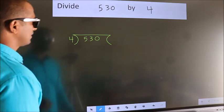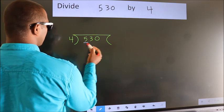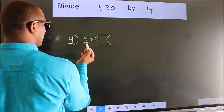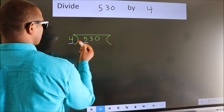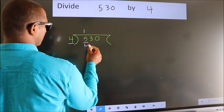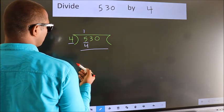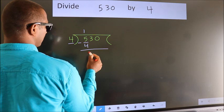Next, here we have 5, here 4. A number close to 5 in the 4 table is 4 once, which is 4. Now we should subtract. We get 1.